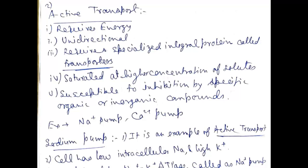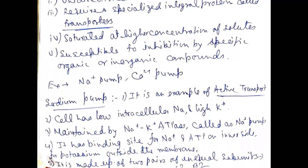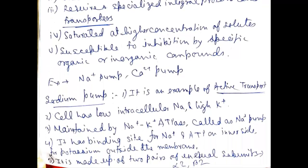The sodium pump is a very important example of active transport. A cell has low intracellular sodium and high potassium. This is maintained by the sodium-potassium ATPase, called the sodium pump. It has binding sites for sodium and ATP on the inner side of the cell membrane, and for potassium on the outside of the membrane. It is made up of two pairs of unequal subunits, alpha2-beta2, and both subunits span the whole thickness of the membrane.